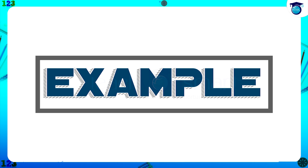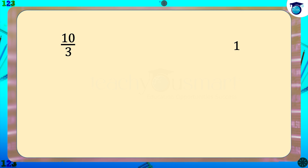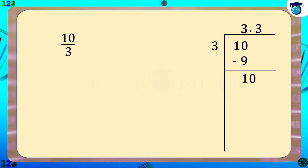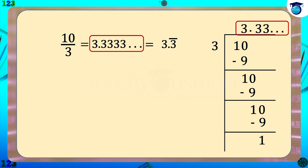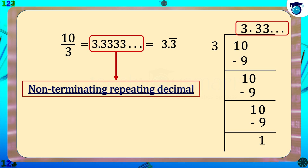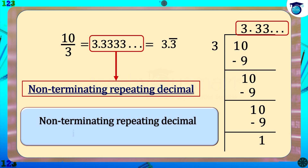Now consider another example: 10 divided by 3. In this example the digits after the decimal point are not coming to an end — that is, the digits after the decimal point are non-terminating. At the same time, the digit 3 is repeating, and that is represented as 3.3 bar. This type of decimal is called a non-terminating repeating decimal. This type of decimal can be written in the form of p by q, hence a non-terminating repeating decimal is a rational number.